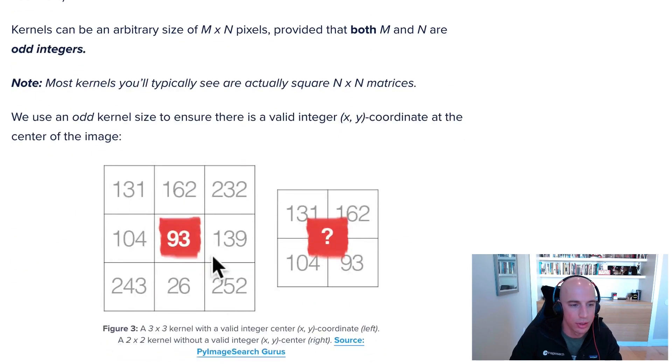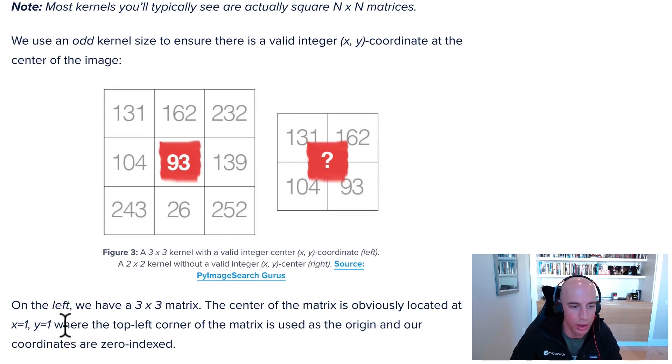To explain that, let's look at this three by three kernel and then this two by two matrix. This is a valid kernel here because we can specify the center value—it's indexed at x equals one, y equals one.